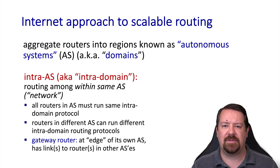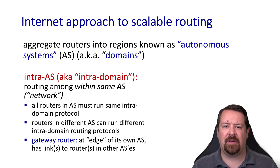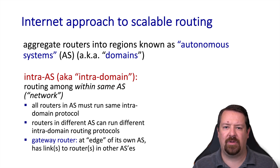We may also think of an autonomous system as somewhat equivalent to a domain, so we may use the terms intra-AS or intra-domain interchangeably. In both cases we're talking about activities within a network as opposed to activities that happen across network boundaries. Within one domain, the routers need to run the same routing protocol to be able to talk to each other, whereas a neighboring AS may choose to run a different intra-domain routing protocol.